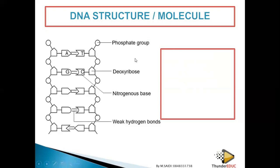Sometimes the exam brings a diagram and asks you to identify the components. For example, if this side shows adenine, you hide the label and ask what it is. The shape of the base indicates adenine; therefore, if this shape is adenine, this side will automatically be thymine. That's how you can identify the structure from the diagram.